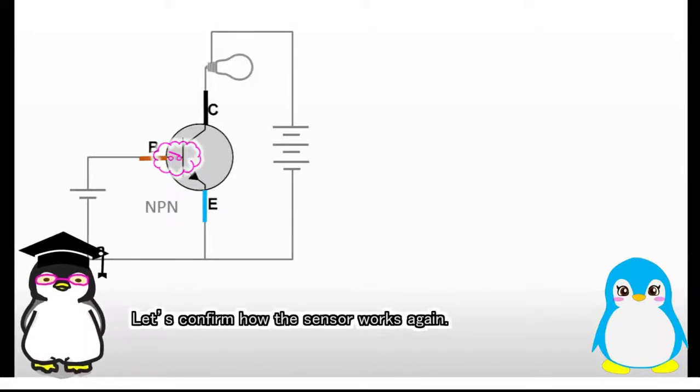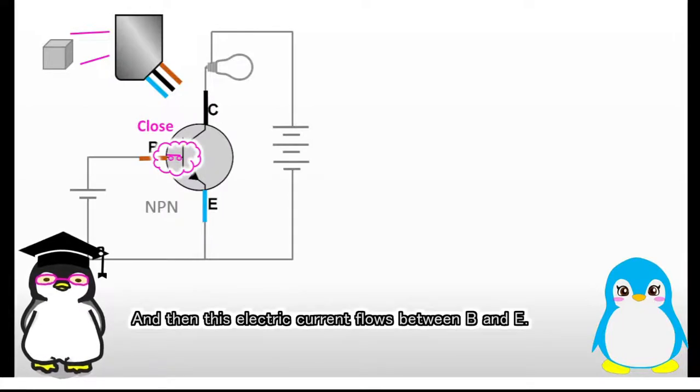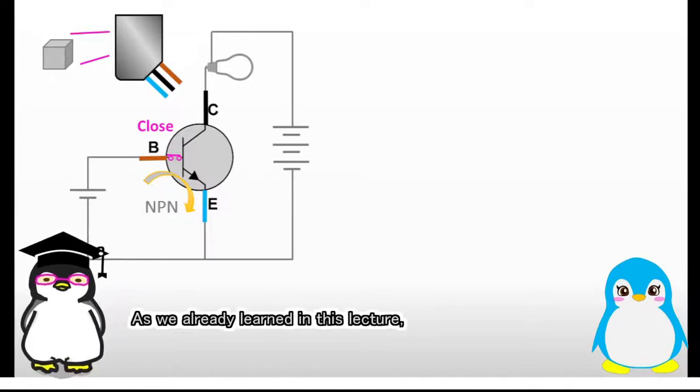Thank you, I'll add something inside the sensor. Let's confirm how the sensor works again. If something is in front of the sensor, the contact inside the sensor closes, and then this electric current flows between B and E. As we already learned in this lecture, the current triggers the main current to flow. Eventually the lamp turns on.